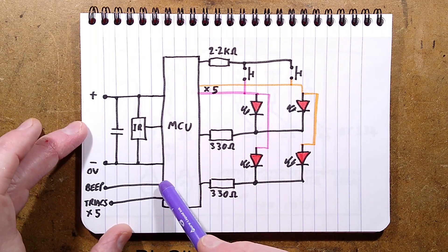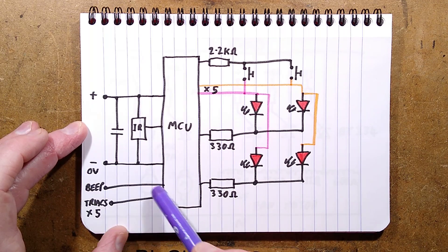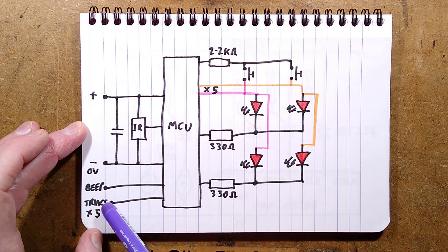The only other thing here is we've got one line going back down that ribbon cable for the beeper and we've got five lines going back for the triacs.